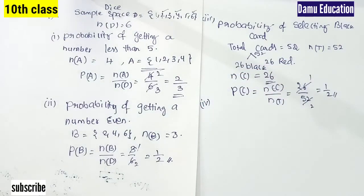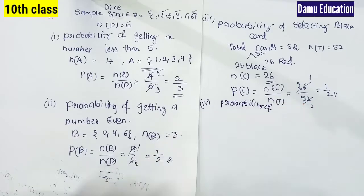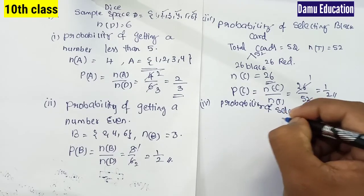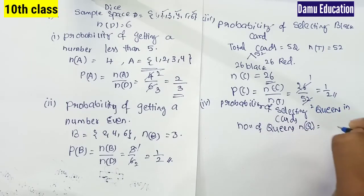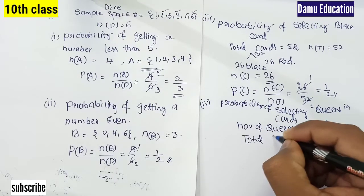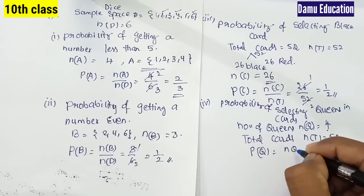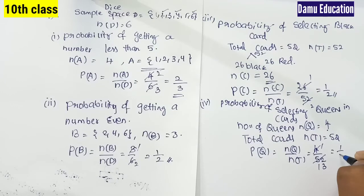Fourth problem: probability of selecting queens in a deck of cards. Number of queens N(Q) = 4 — two red (one heart) and two black (spade and clubs). Total cards N(T) = 52. So P(queens) = N(Q)/N(T) = 4/52 = 1/13.